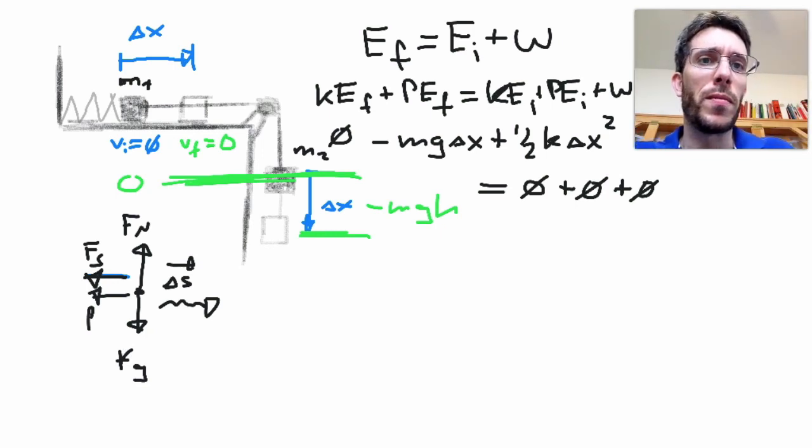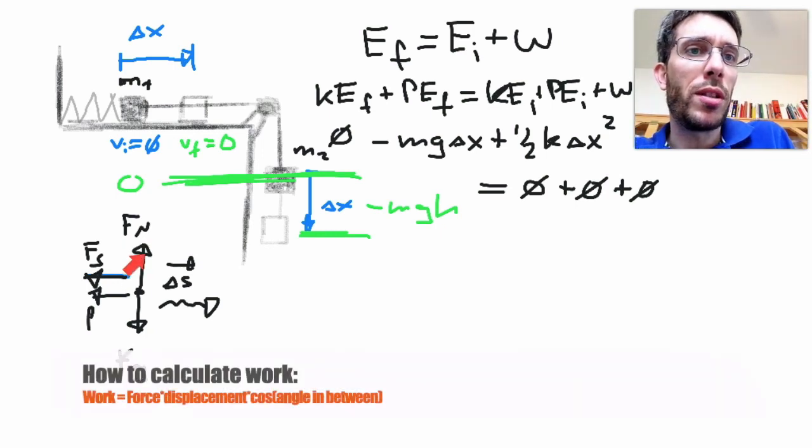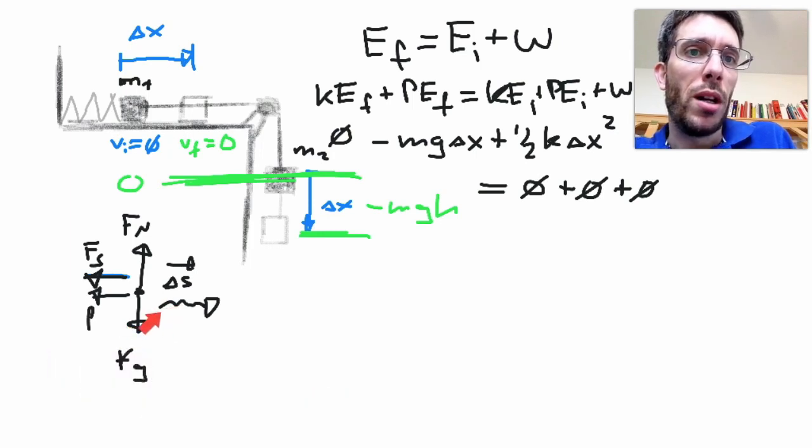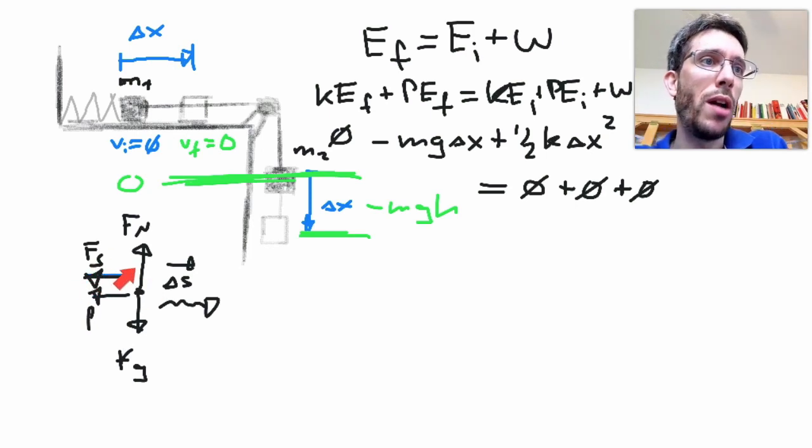So I can see that between my normal force and the distance of travel, there is a 90 degree angle, so it cannot do any work. The same is true for gravity. The spring force here has an angle of 180 and definitely will do work. However,